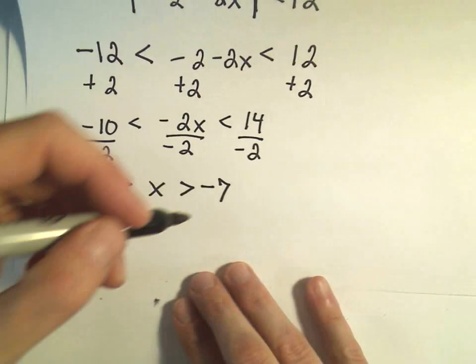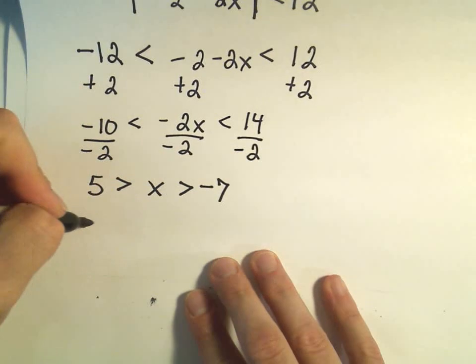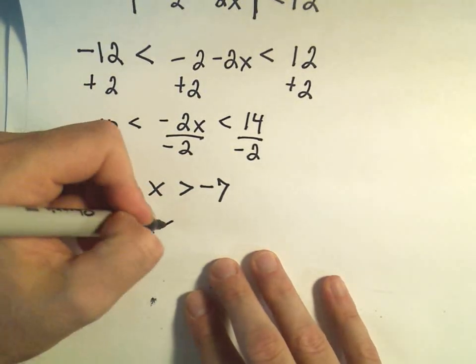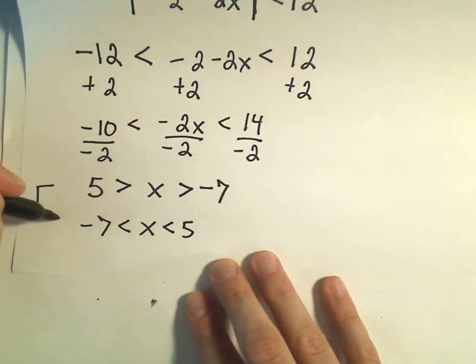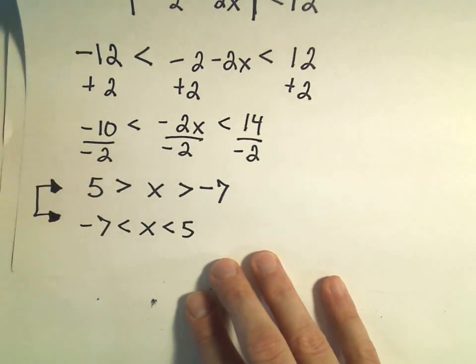You could equivalently write this as negative 7 less than x less than 5. Both of these statements certainly talk about the same values of x.